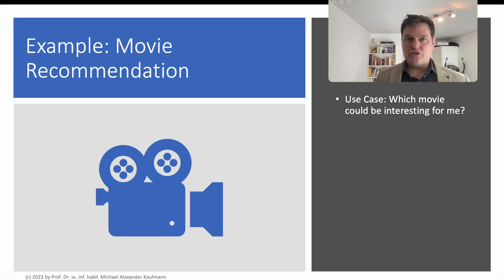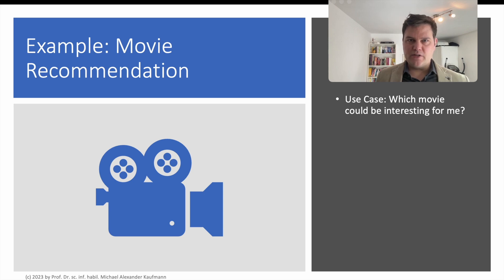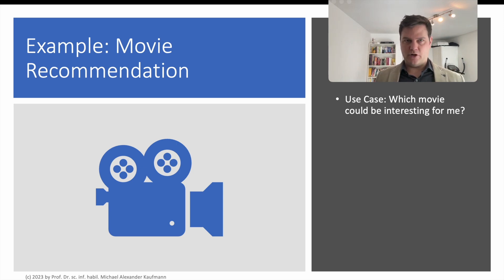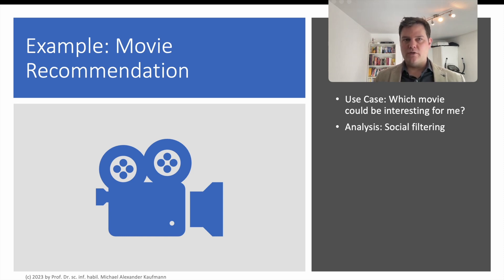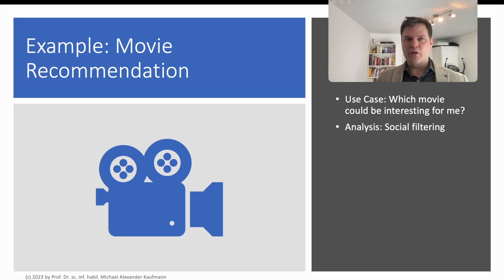In this course, we'll implement such a movie recommendation service step by step as a database application using SQL. We'll start by describing the use case: users can log in to a visualization tool and enter a movie name. Based on this selection, the movie recommendation service will visualize a set of movies that are similar or relevant to this target movie. Now, we need to find a data-driven way to determine relevance — so, define the data analysis. We can use a technique called social filtering. Social filtering is a technique for finding additional content users might like based on what other users who like the same content also liked.